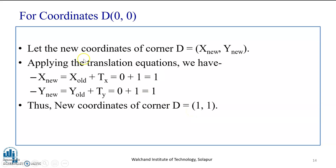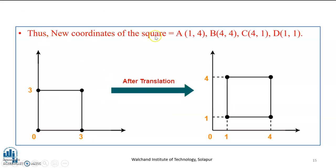And for the last coordinate, the new coordinates of corner D is equal to x-new, y-new. Applying the translation equations, we have x-old plus Tx equal to 0 plus 1, that is 1. And y-new is equal to y-old plus Ty equal to 0 plus 1, that is 1. Thus, the new coordinates of the square ABCD are: A(1,4), B(4,4), C(4,1), and D(1,1). As we can see here, the diagram shows the square before translation, and this is the representation after applying the translation with one unit in x and y direction. I hope you have understood the problem.